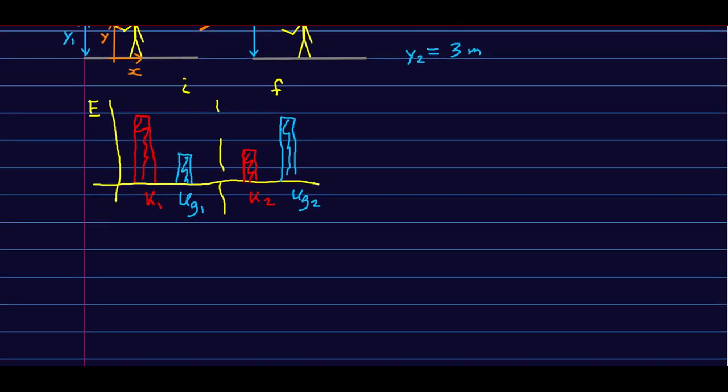And we know in freefall that the kinetic energy and the gravitational potential energy add up to a constant, the total energy. So K1 plus UG1 equals K2 plus UG2. And notice how I've lined that up. I'm really just taking my energy bar chart and I'm converting it into this formula. So the energy bar chart is just a visual way of getting your conservation of energy equation.